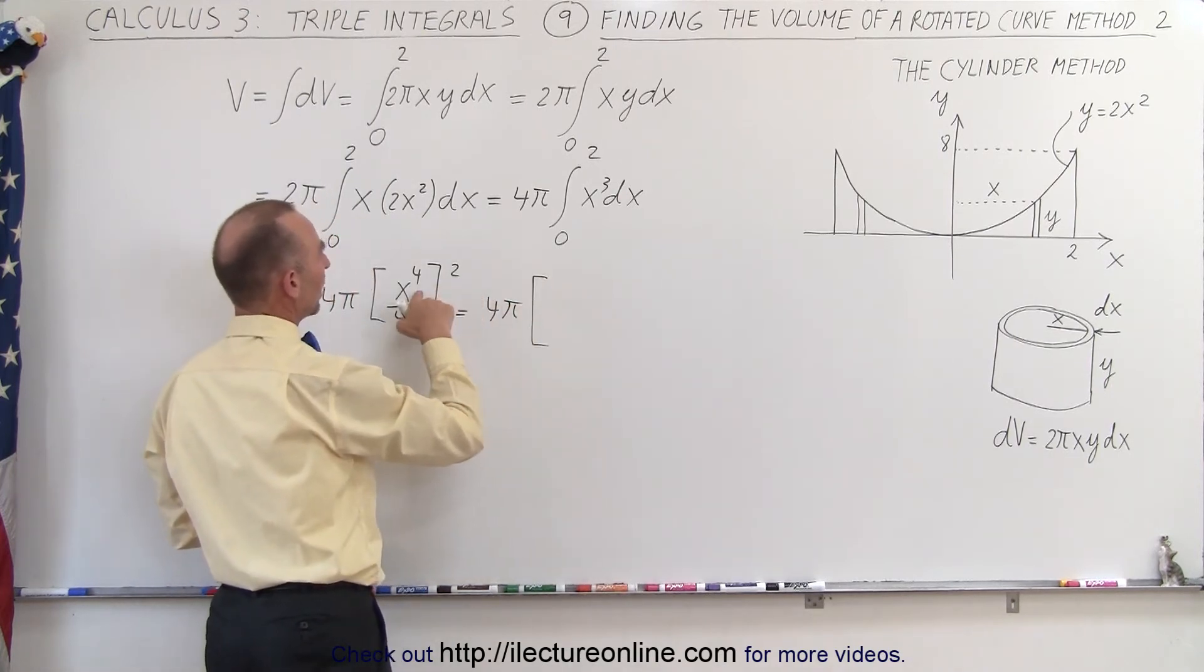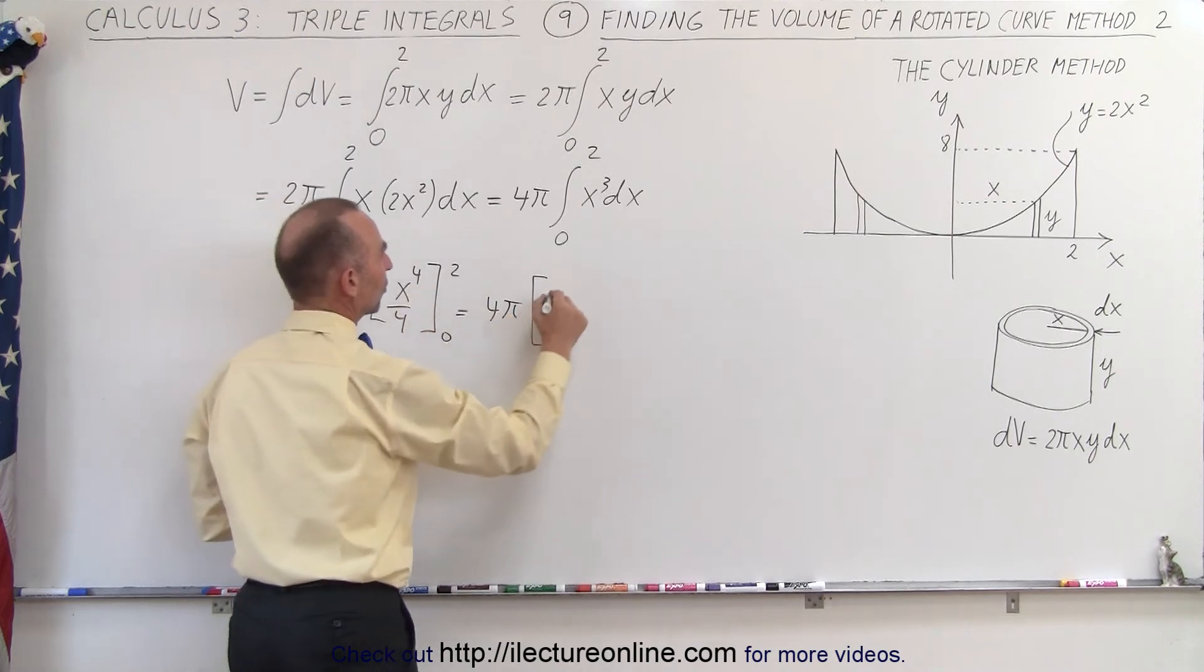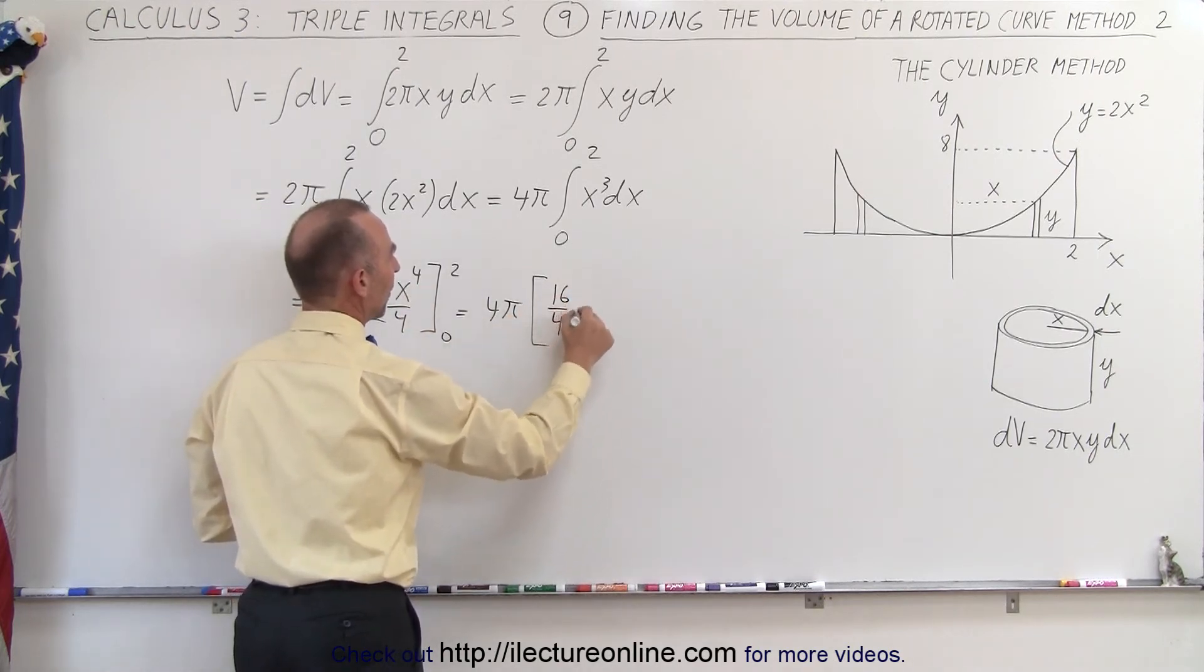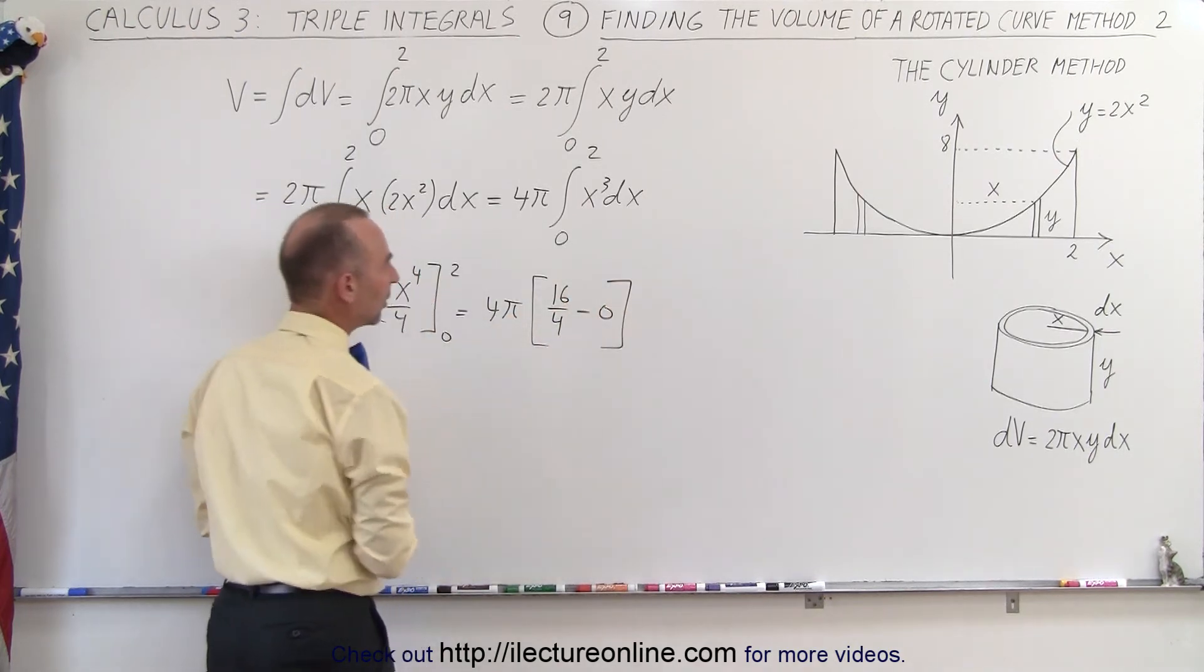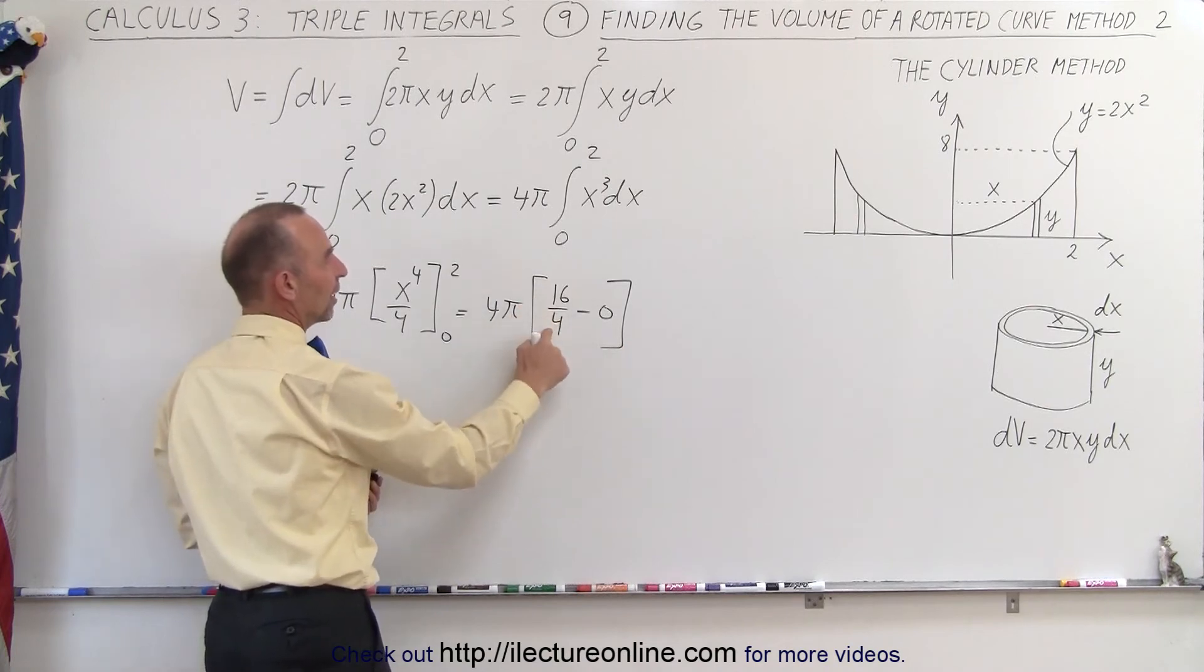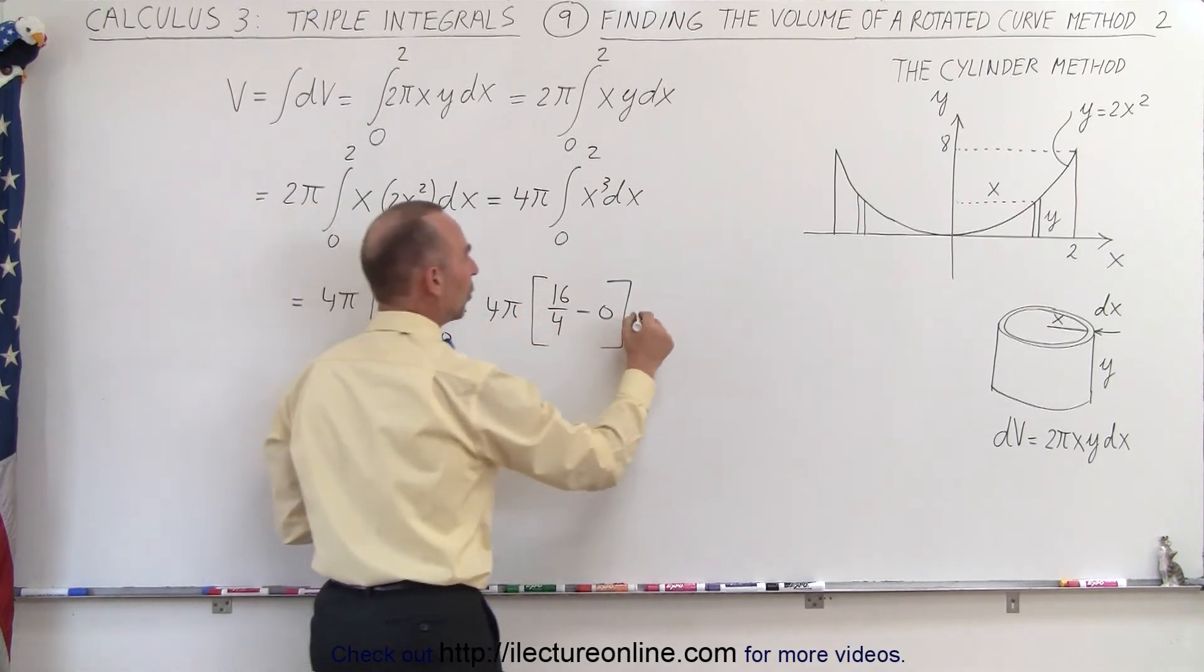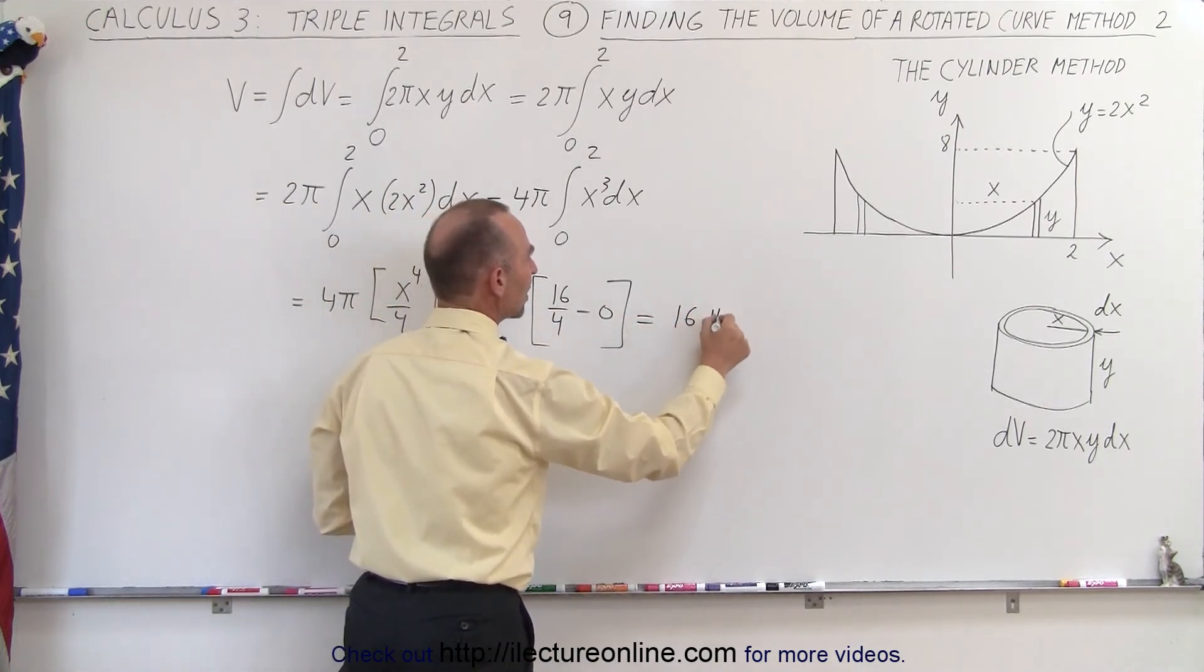We get 2 to the 4th power, which is 16 divided by 4 minus 0, when we plug in the lower limit, and 16 divided by 4 is 4 times 4, which is equal to 16 pi.